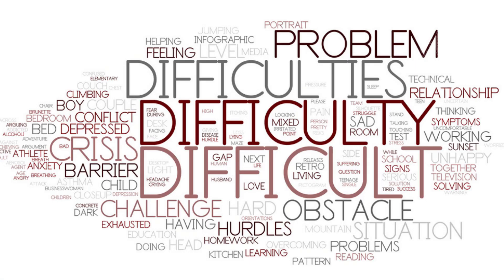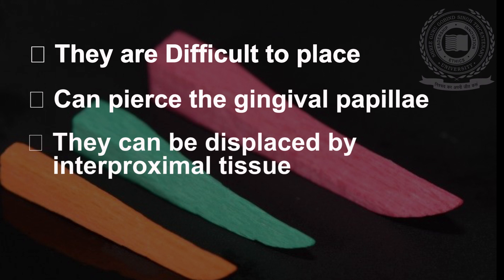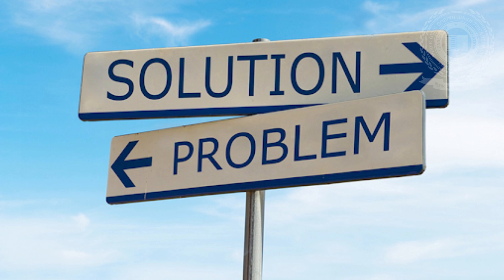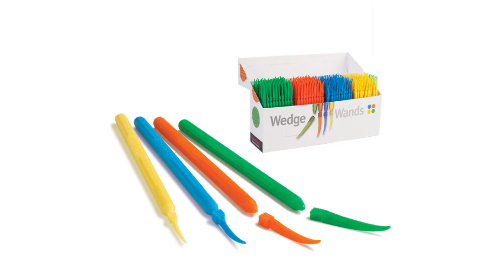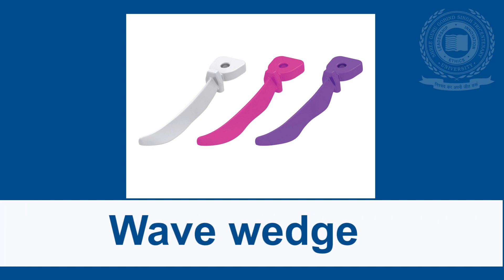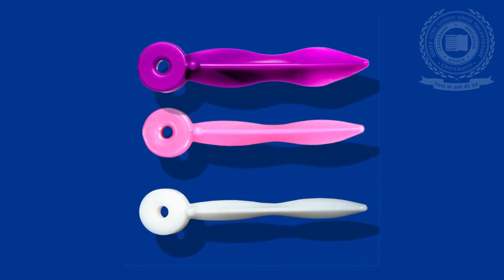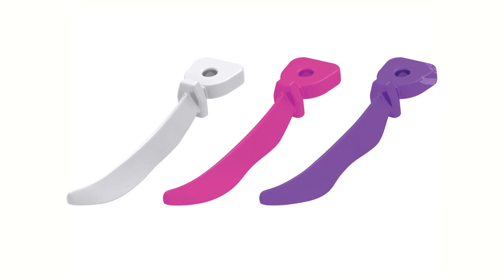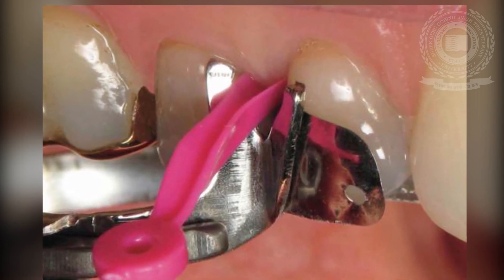Now let's consider the difficulties of conventional wedges: they are difficult to place, can pierce the gingival papillae, can be displaced by interproximal tissue, and close only the matrix margin on the side they are inserted. To overcome these difficulties, advancements in wedge design have been made. Wedges with a handle allow ease of placement — after insertion in the interdental area, twist the handle to separate it. The wave wedge is rigid enough to provide separation; fine lateral wings compress as they slip into the interproximal space and flare again upon exit. A central concavity ensures it clicks into place for optimum sealing. These wedges are soft and adaptive enough to provide sealing of the matrix at the gingival margin.